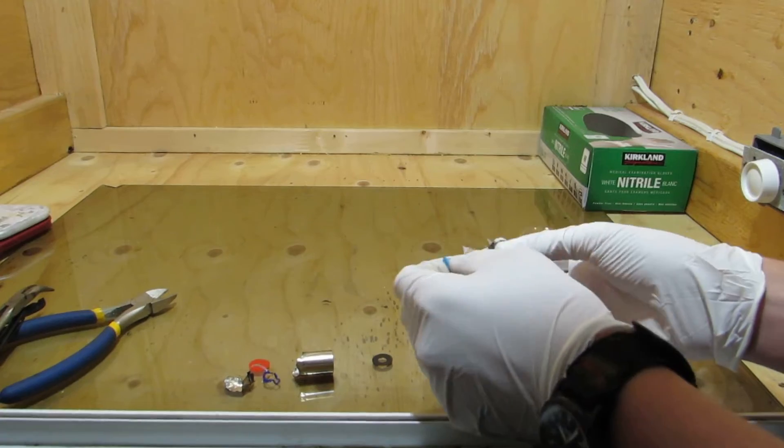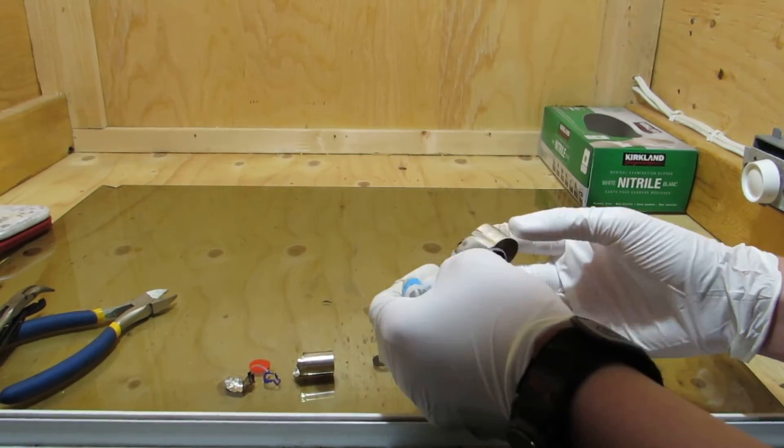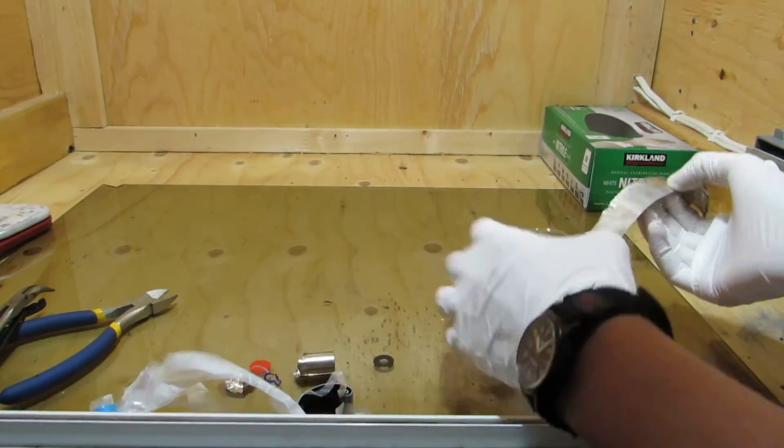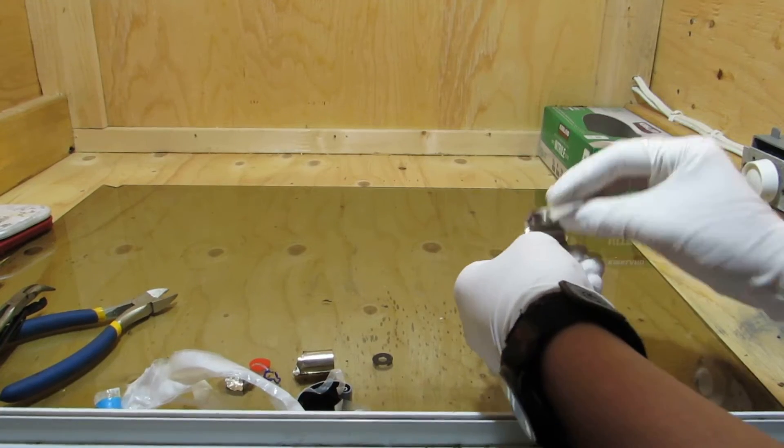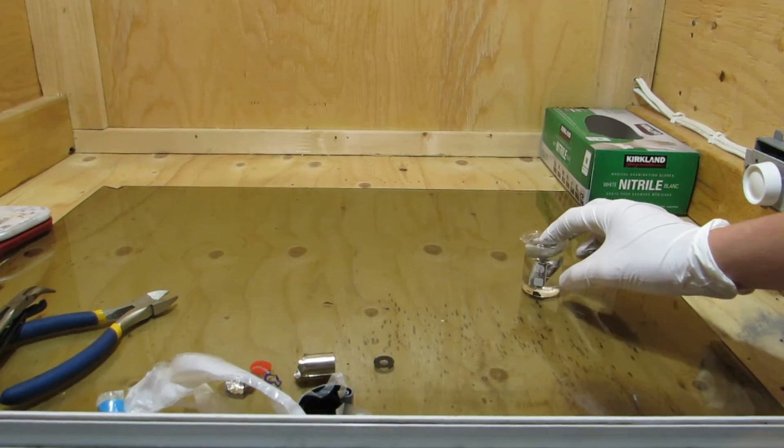Once the internal contents are removed, we must work quickly as unraveling the foil will expose the lithium to air. The lithium metal obtained is immediately placed in the mineral oil to prevent it from oxidation.